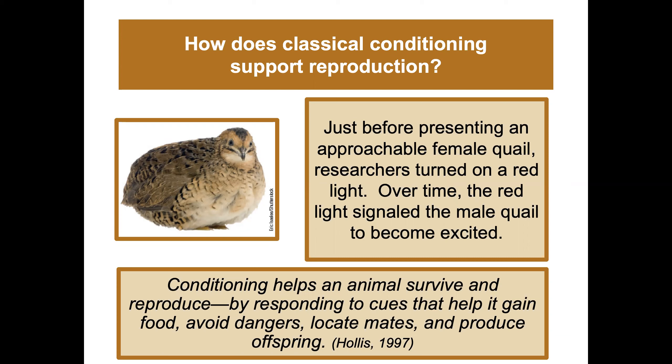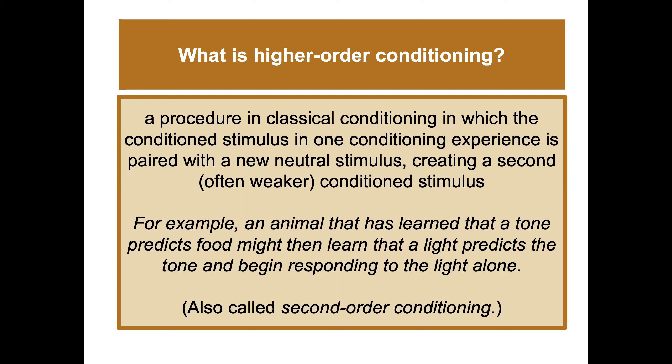Higher-order conditioning is a procedure in classical conditioning in which the conditioned stimulus from one conditioning experience is paired with a new neutral stimulus, creating a second — often weaker — conditioned stimulus. For example, an animal that has learned a tone predicts food might then learn that a light predicts the tone, and begin responding to the light alone. This is also called second-order conditioning.